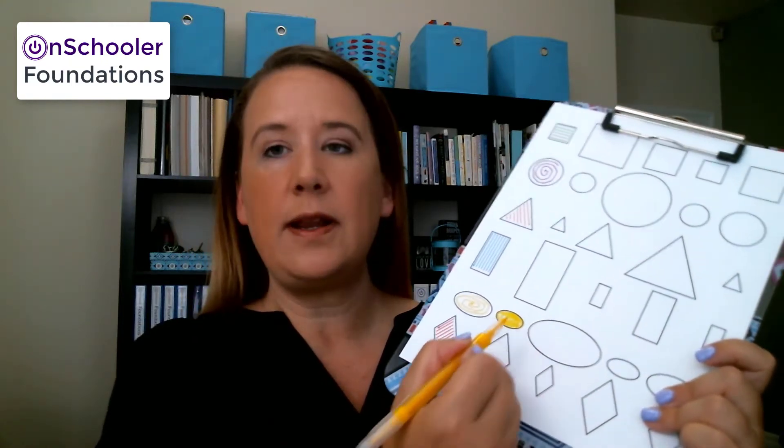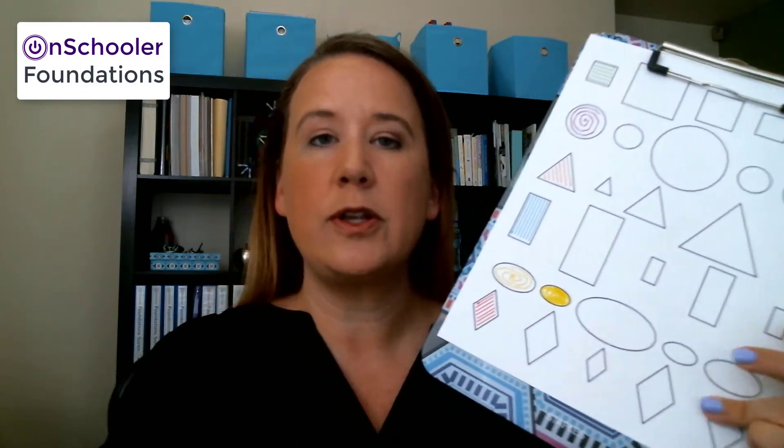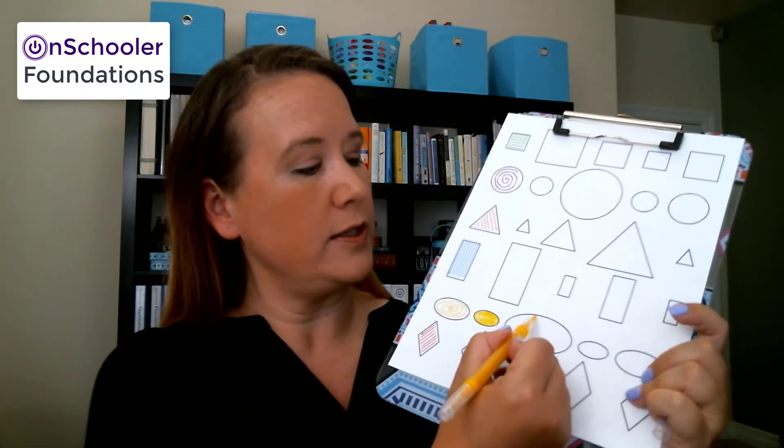This is the same direction as the curve that we would use to draw the belly of a capital D. So again, start at the top.